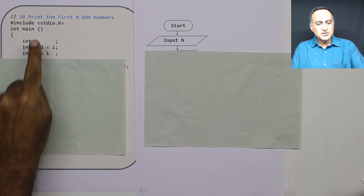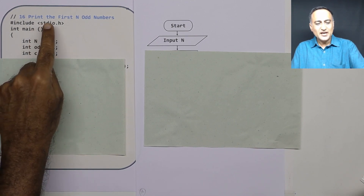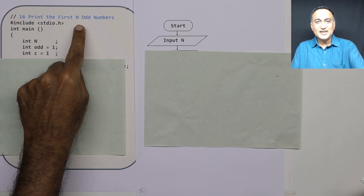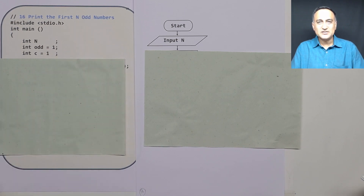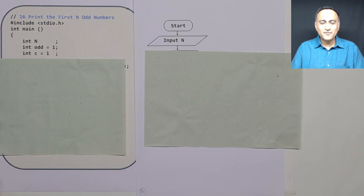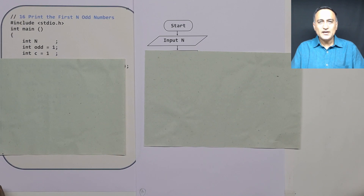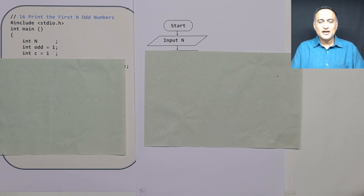But suppose I say print the first n odd numbers and I give n as 5, then I will print 1, 3, 5, 7, and 9 — because till 9 I am reaching my first 5 odd numbers.